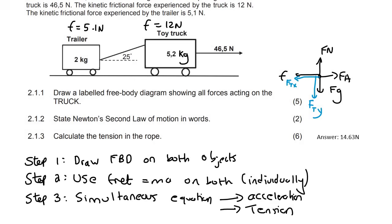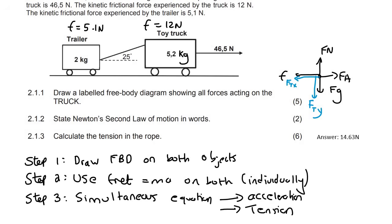I don't care if the objects are on a table, if the one object's hanging off the table and the one object's on the table, or if maybe they're hanging around a pulley, it doesn't matter. This technique works wonderfully. And so let's try our technique. So what I like to sometimes do is I just divide my page in half and I'm going to do the trailer, and then over here I'll do the toy truck.